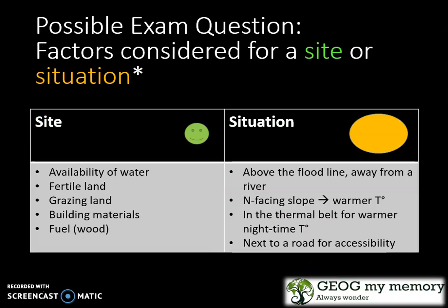A possible exam question would be to understand and state the factors considered for site and situation. Site refers to the availability of water, whether the land is fertile, whether animals are able to graze on it, and whether building materials and fuel such as wood are available.